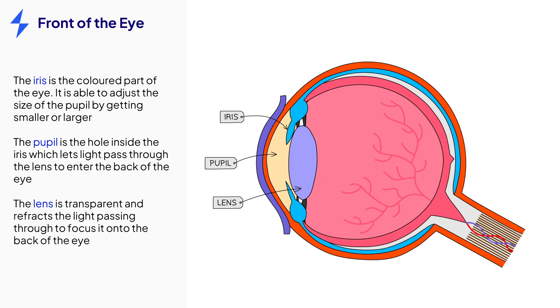Behind the pupil is a transparent disc called the lens. The lens reflects the light passing through the eye to allow it to form a focused, clear image on the back of the eye where the light is detected by receptors.